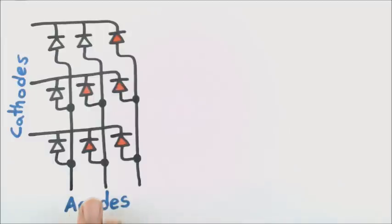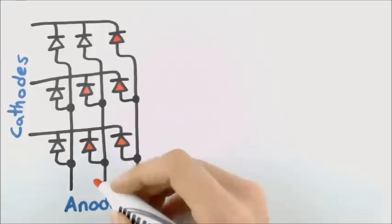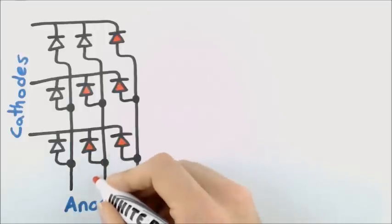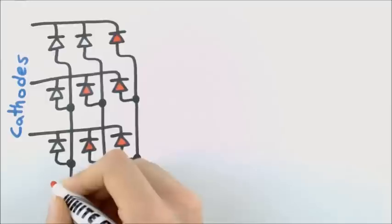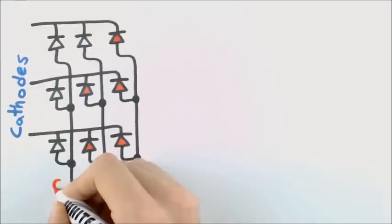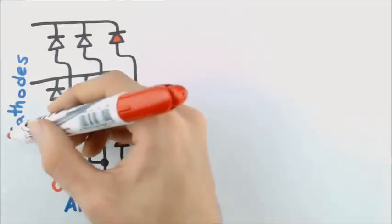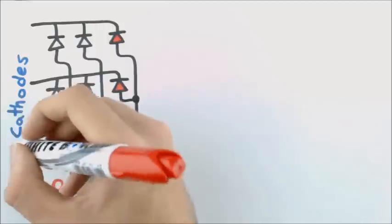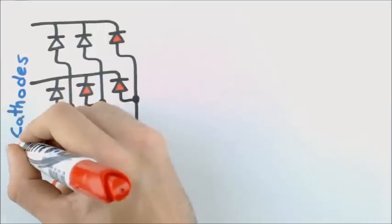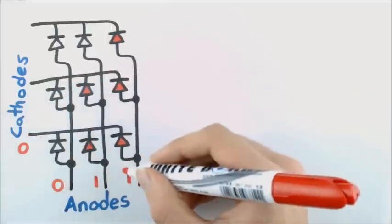Now we only want to control the second and third column in our example, so we know we need to turn those on, and this one we should have off. Now for our bottom row, we want to turn on LEDs, so we should have this one as off.